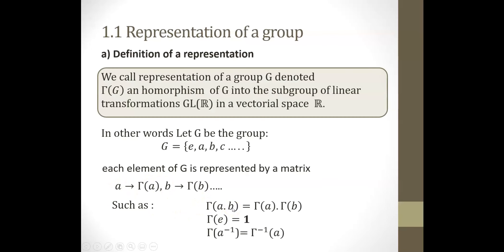First, I will introduce the representation of the group. What is a representation of a given group? We call a representation of a group — denoted by Γ(G) — a homomorphism of G into the subgroup of linear transformations in a vectorial space R. This means that we represent each element of a group by a matrix that acts on a vector space R.